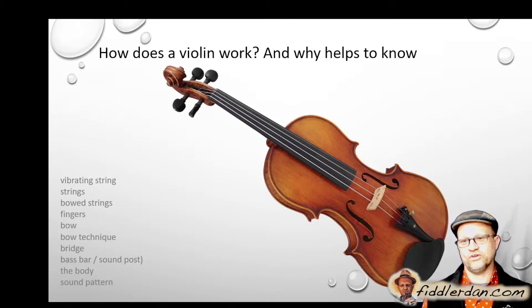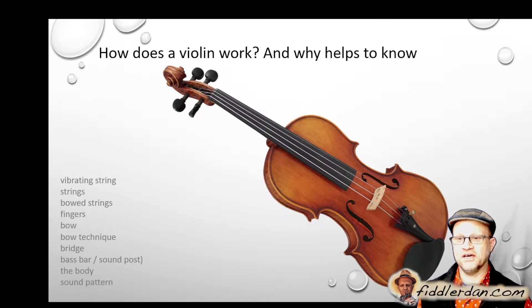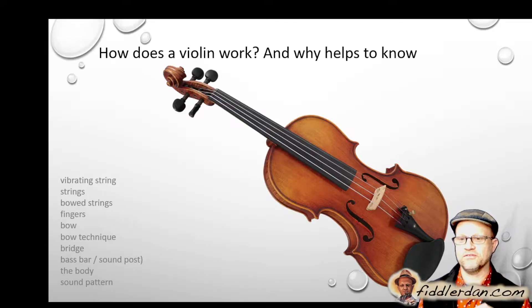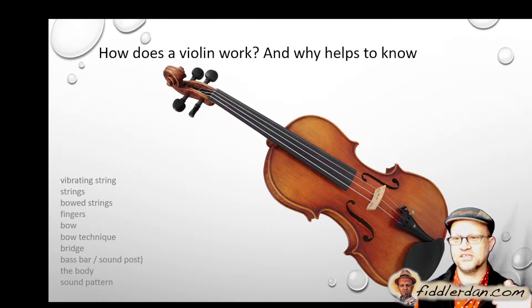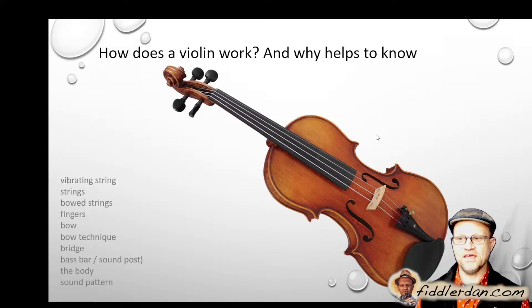A violin works through a signal chain starting first with a vibrating string, then the strings themselves and what they're made up of, then vibrating the string using a bow, changing the notes using our fingers. The technique we use with a bow has an influence, the bridge of a violin — a big focus for luthiers — is really important, and that drives the signal down into the body of the violin through the bass bar and the sound post, and this produces a sound pattern. Each of these elements has a big influence in how a violin works and produces sound, and you can modify all of these things through technique or through changing the materials of a violin itself to change the sound, hopefully to arrive at a sound that you might like to get.